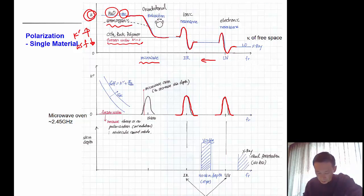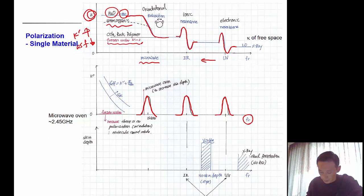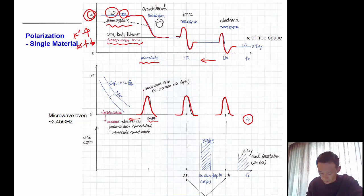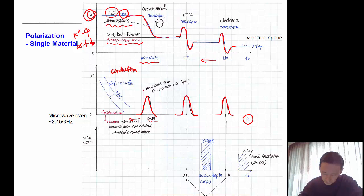In the real and imaginary permittivity, because of the relaxation behavior, the imaginary part shows a bell-shaped curve. As the frequency gets much smaller — around the gigahertz region — the ohmic loss or conduction contributes at the lower frequency, so the effective permittivity increases according to this kind of equation.